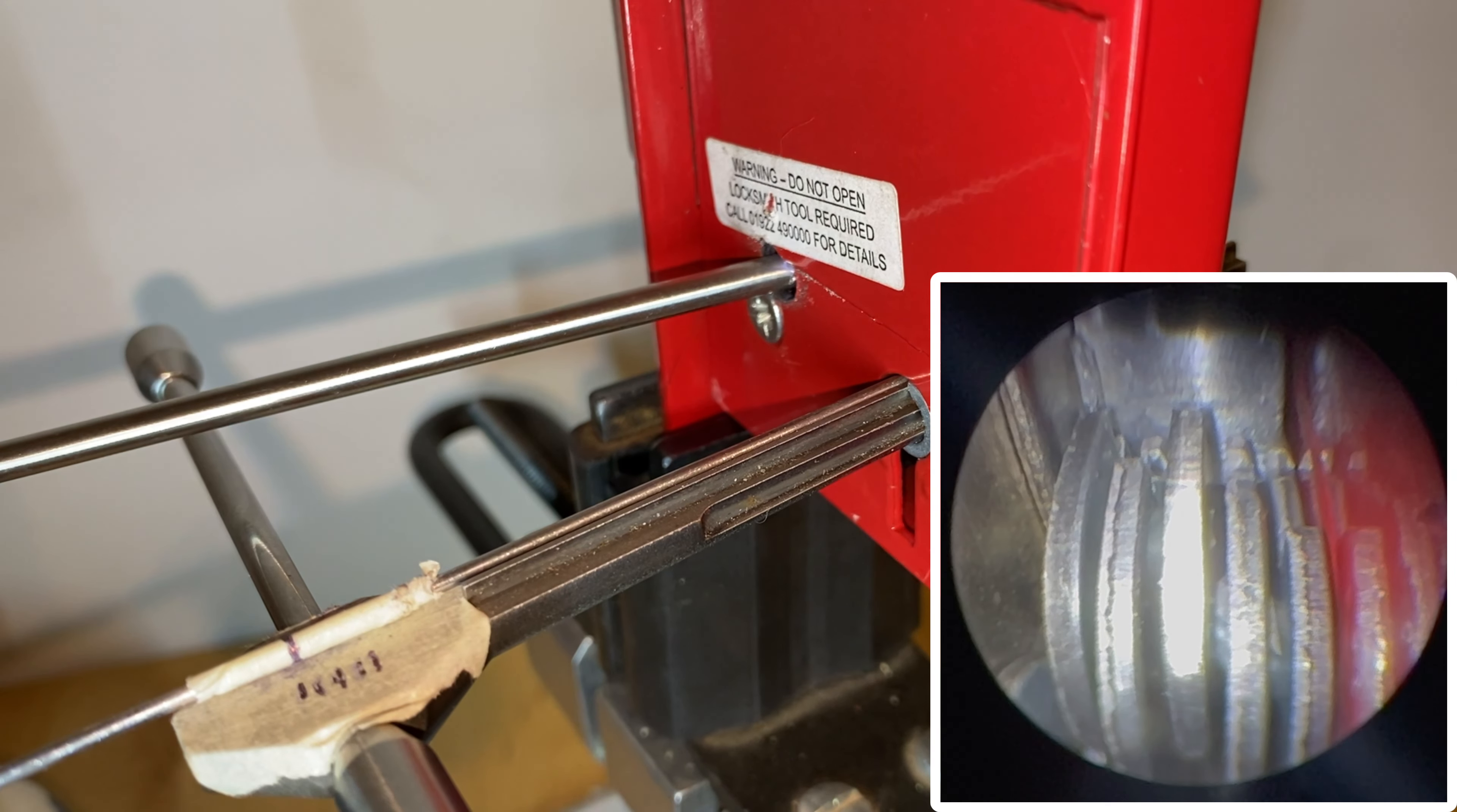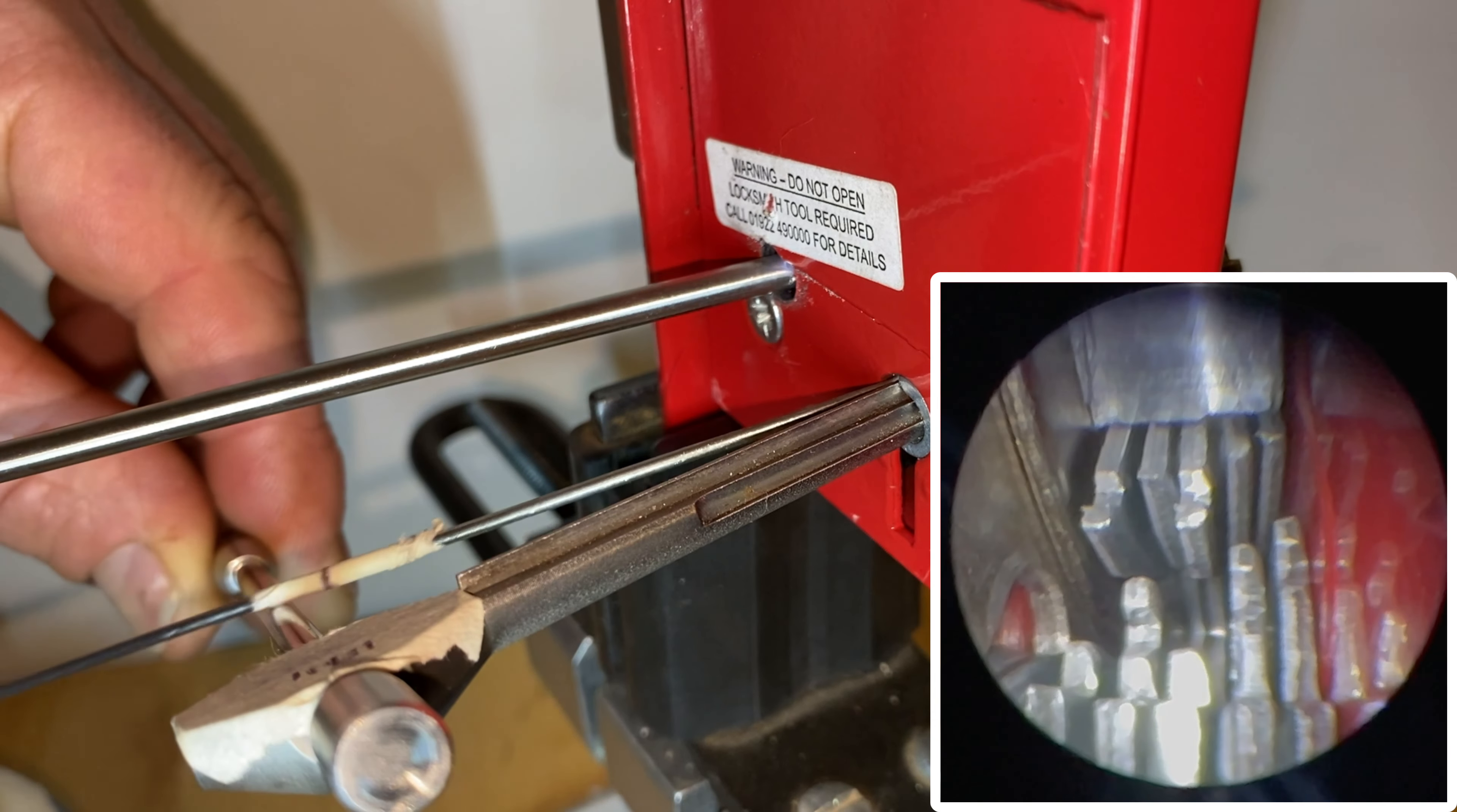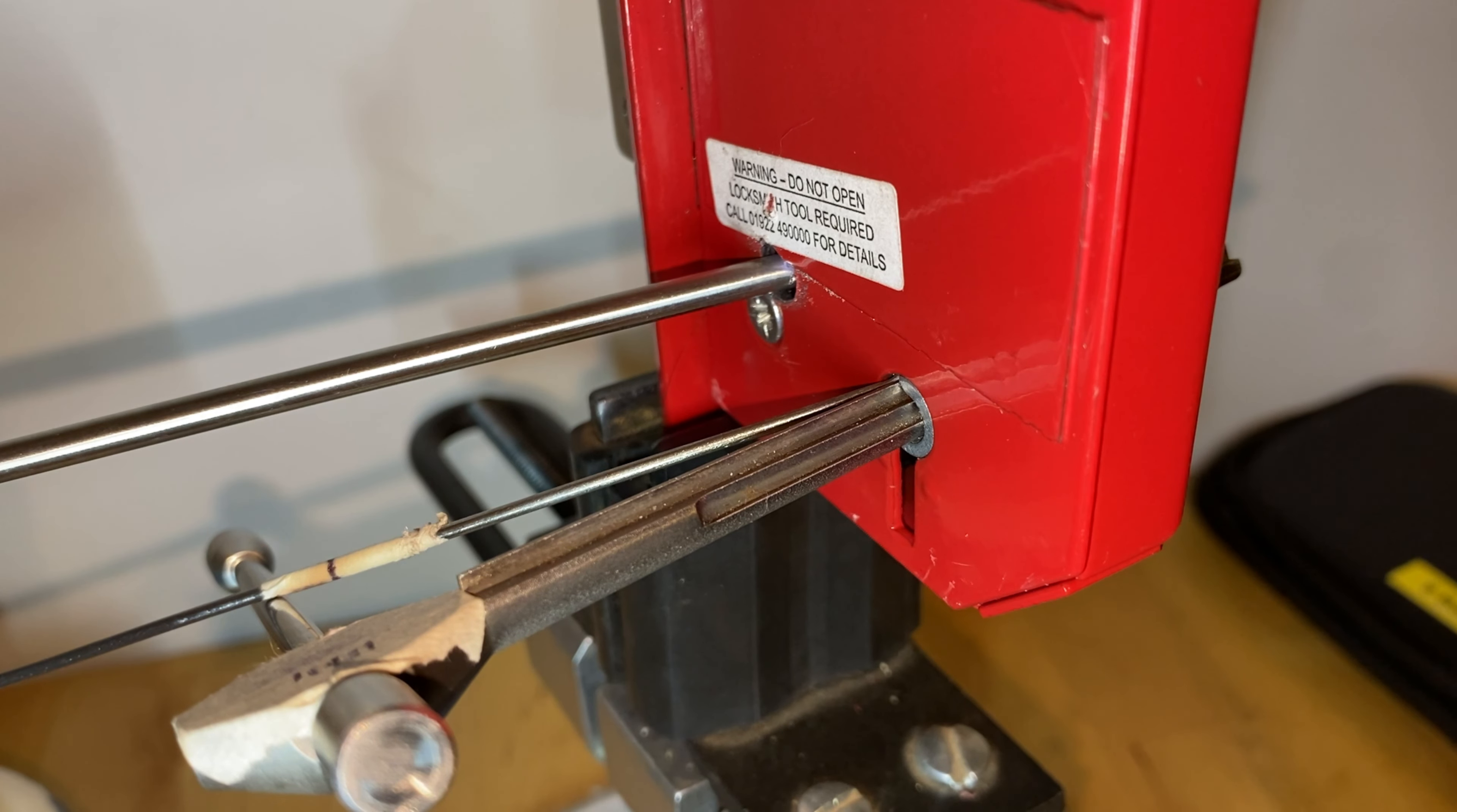So the binding order on this was five, four, three, two, one. Not always—sometimes you might find the middle lever, three or four, will bind first—but on this particular lock, we worked out that it was binding from the curtain side of the lock backwards, and that's typical actually for the fortress range of locks. So I hope that helps.